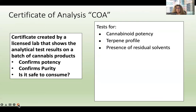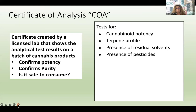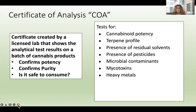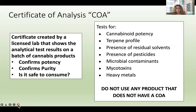These tests also let us know whether or not there are residual solvents. When many products are made, solvents are used in that process, and we do not want to be consuming solvents. Testing for solvents is very important. We also want to know if there are pesticides in our product — in general, we do not want pesticides. We also look at microbial contaminants like bacteria, mycotoxins like mold, and heavy metals as well. I do not endorse the use of any cannabis products that do not have an available, easy-to-read, transparent COA.